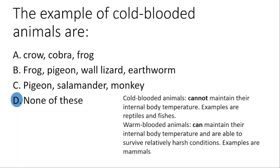The example of cold-blooded animals — the correct answer is none of the given options. Cold-blooded animals are those which cannot maintain their internal body temperature; examples are reptiles and fish. On the contrary, warm-blooded animals can maintain their internal body temperature and are able to survive at relatively harsher conditions; examples include mammals.